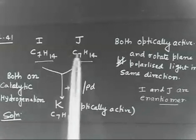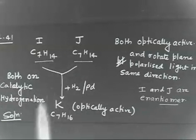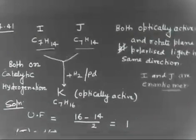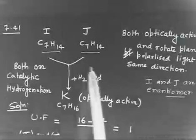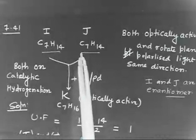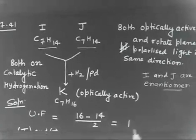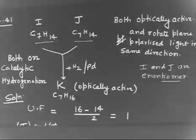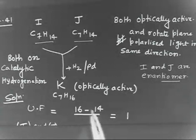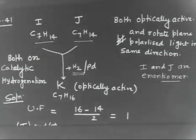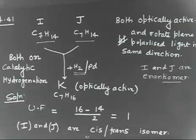Another possibility is that I and J may be cis and trans isomers, because both add one mole of hydrogen. Now the unsaturation factor: you have 14 hydrogens; for C7 you expect 7×2+2 = 16 hydrogens. So (16−14)/2 = 1. The unsaturation factor is 1, so I and J both contain one double bond. It cannot be a ring because this compound adds one mole of hydrogen — that confirms a double bond.